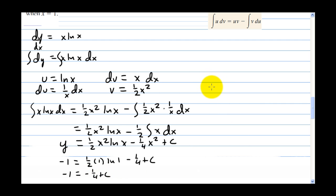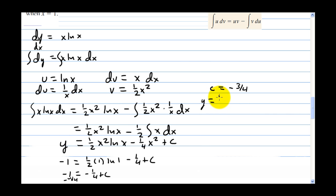So c equals negative 1 plus one fourth, which is negative three fourths. Therefore y equals one half x squared natural log of x minus one fourth x squared minus three fourths. And there's the entire equation.